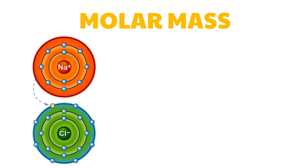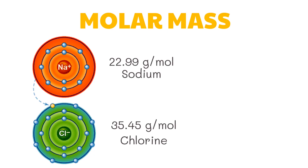For example, the molar mass of sodium chloride can be calculated by finding the atomic mass of sodium and the atomic mass of chlorine and combining them. The molar mass of sodium chloride is 58.44 grams per mole.